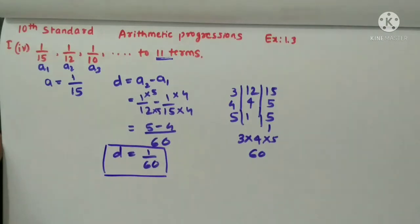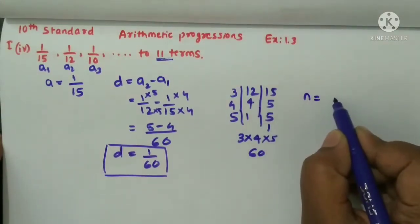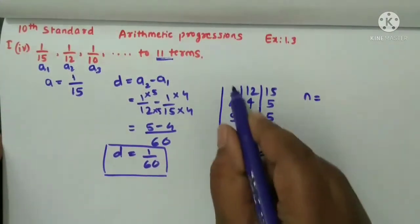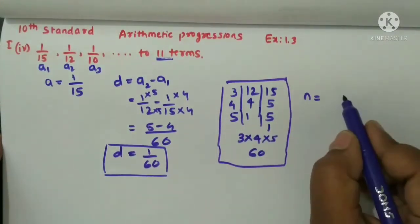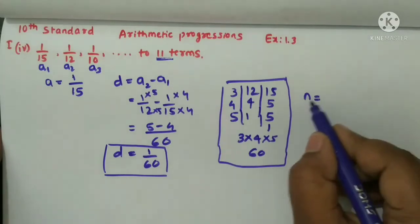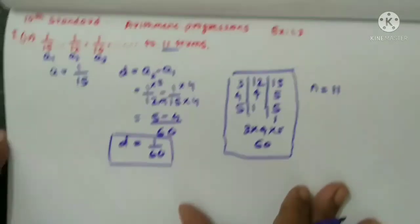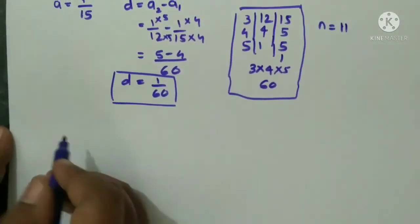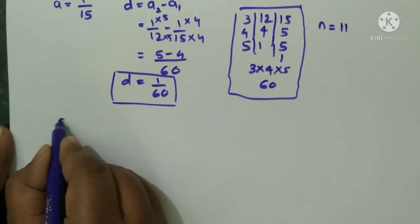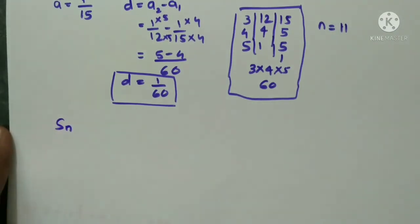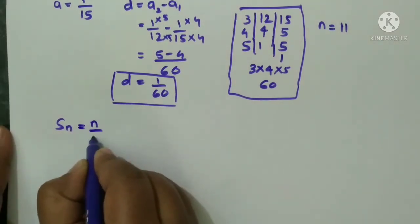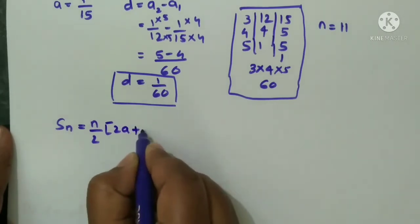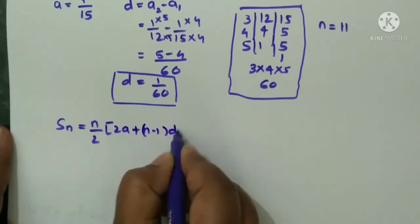D value we got as 1 by 60 and we know that n value is 11 here. This is LCM I found it. N value is 11 here, so now I will use the Sn formula to calculate sum of the 11 terms. So Sn is equal to n by 2 into 2a plus n minus 1 into d.